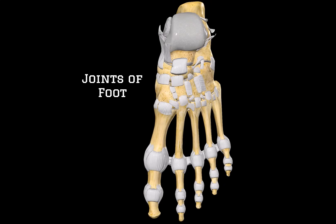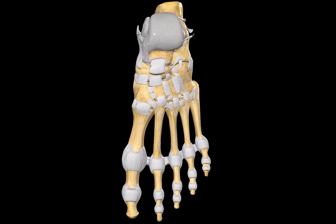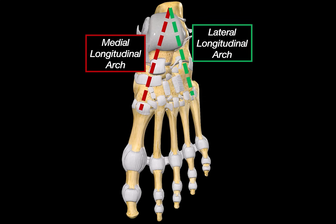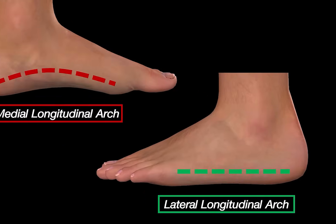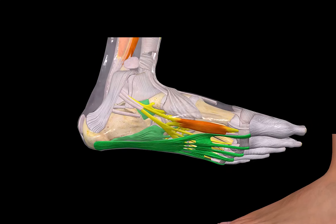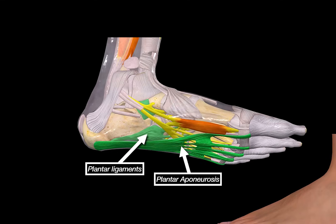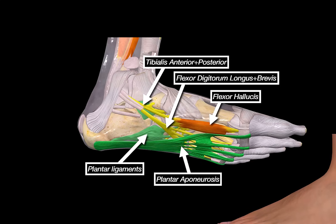Now let's talk about the arches of the foot. We have three main arches: the medial longitudinal arch, the lateral longitudinal arch, and the transverse arch running across the foot. The lateral side is flat and takes the majority of weight, while the medial side is slightly arched. The medial arch is supported by the plantar aponeurosis — a thick fibrous sheet spanning from the heel to the toes — the long plantar ligament, the short plantar ligament, and the spring ligament. Muscles also reinforce this arch, including the tibialis posterior, tibialis anterior, flexor hallucis longus, and flexor digitorum longus and brevis, which tense up during activity to help preserve the arch's curvature.